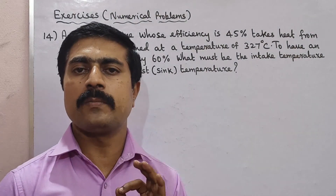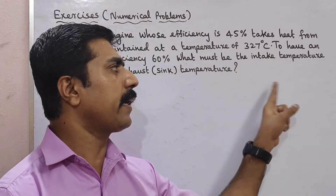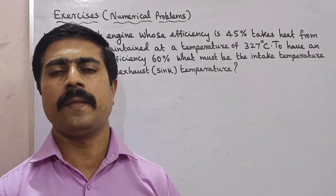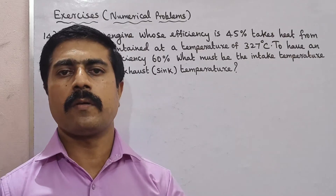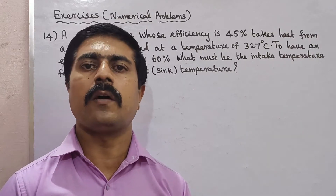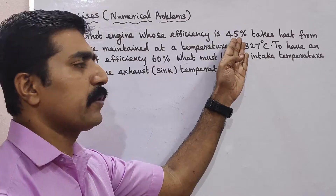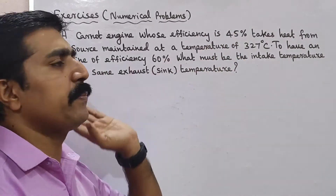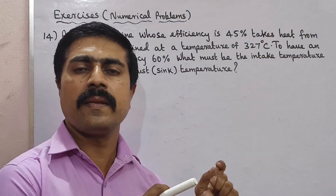In the Tamil Medium Textbook, there is a note in the bracket: the cold reservoir temperature TL is constant. That is, for both the 45% efficiency and 60% efficiency cases, TL remains the same.